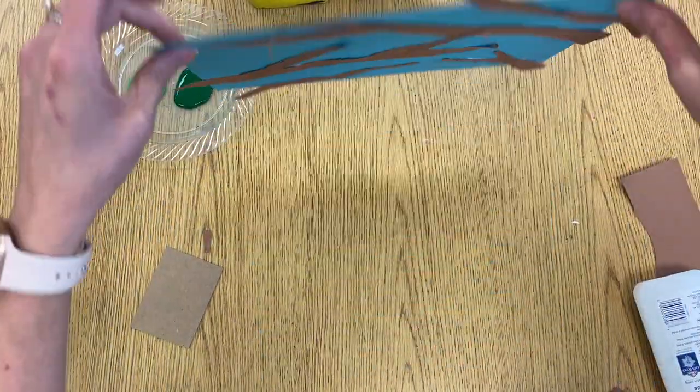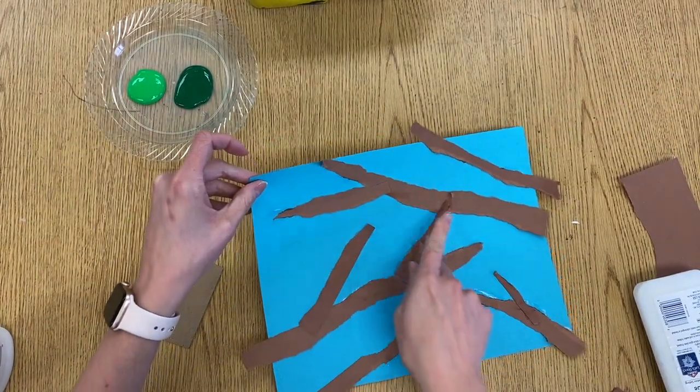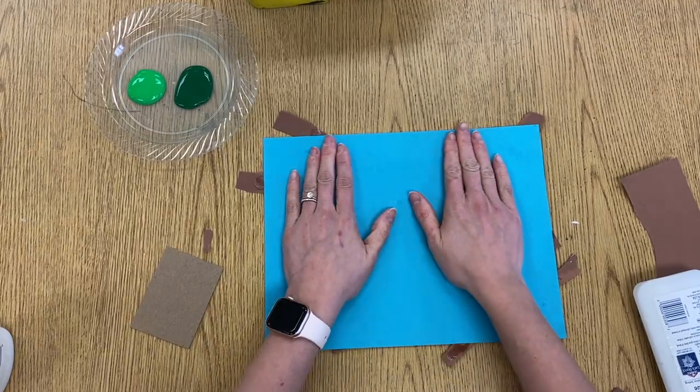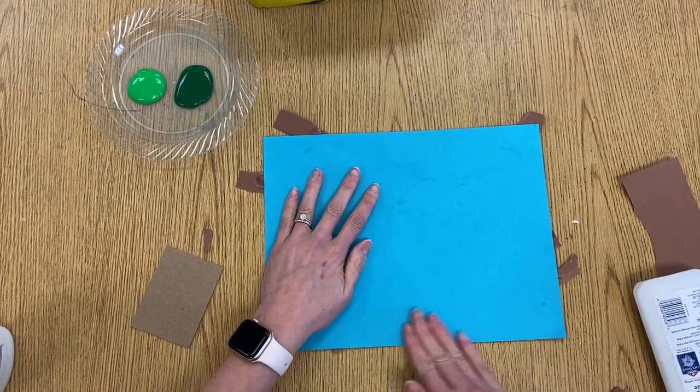I'm going to flip my paper over. And since my branches are kind of curling up, this part's really important. Flip it over and really press hard on the back so everything flattens out before we do the next step.